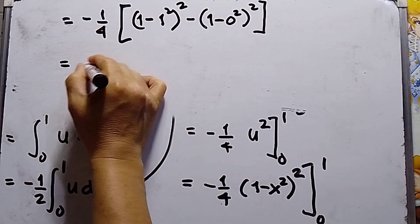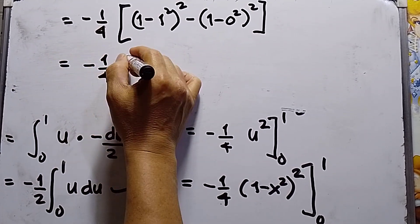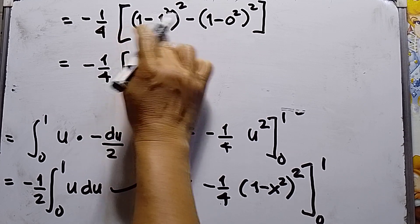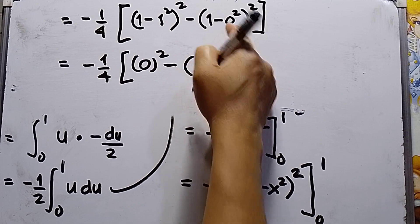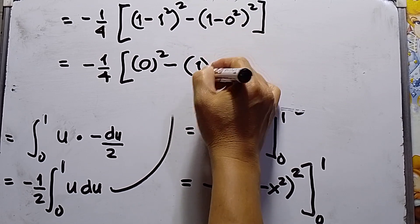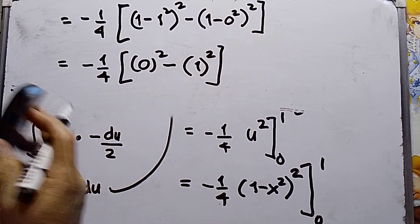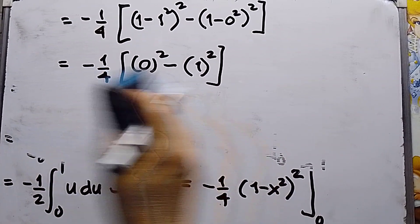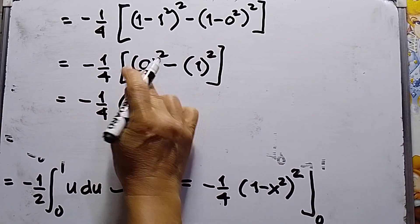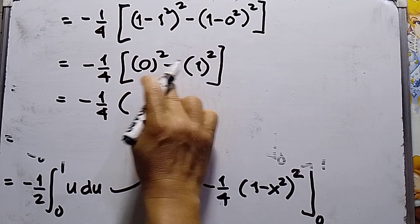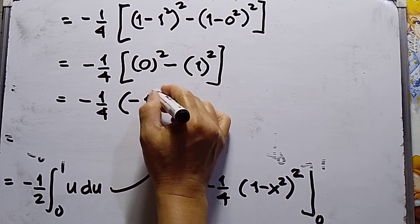So this is negative 1 over 4, 1 squared, this will be 0 squared, minus 1 minus 0 squared. This will be 0, this will be 1, then squared. So negative 1 over 4, 0 minus 1 squared, so this will be minus 1.